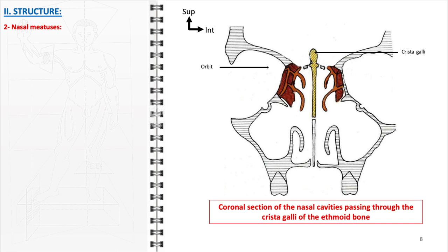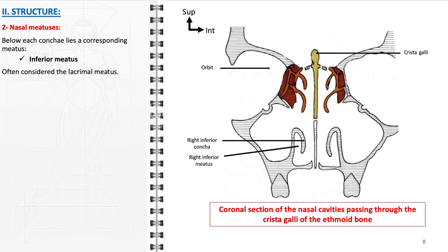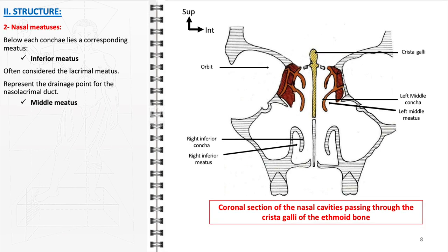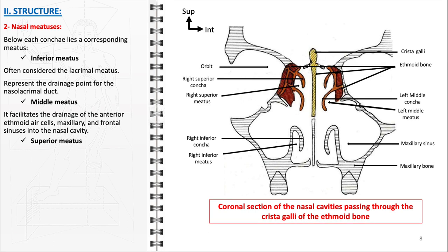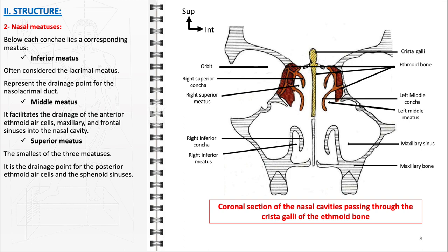The nasal meatuses, positioned beneath each corresponding nasal concha, are essential air passages in the nasal cavity, each serving specific drainage functions. The inferior meatus, often referred to as the lacrimal meatus, is located between the inferior nasal concha and the lateral nasal wall, and represents the drainage point for the nasolacrimal duct through which tears are channeled into the nasal cavity. The middle meatus, situated between the middle nasal concha and the lateral nasal wall, is responsible for the drainage of the anterior ethmoid air cells, the maxillary sinuses, and the frontal sinuses. The superior meatus, the smallest among the three, is located between the superior nasal concha and the lateral nasal wall, and serves as the drainage point for the posterior ethmoid air cells and the sphenoid sinuses.